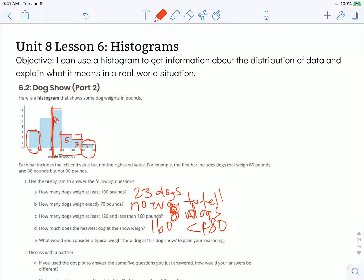Letter E, what would you consider a typical weight for a dog at this dog show? Explain your reasoning. So when we're talking about typical weight, we're talking about the average or we're talking about the median. So we're talking about one of those middle values and we can think about a histogram being like a teeter-totter.